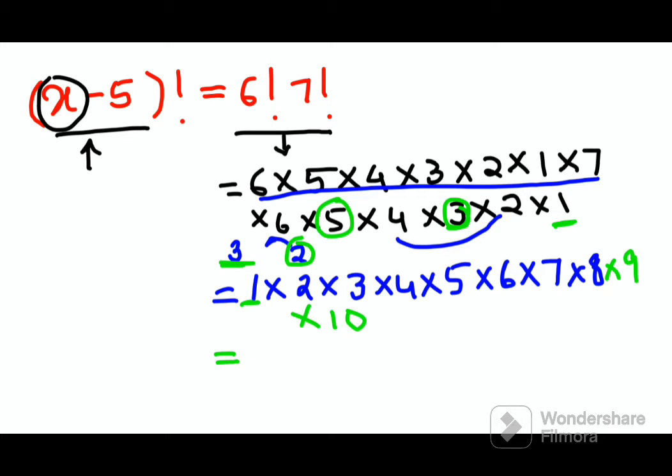So now if you look closely, this entire multiplication is happening from 1 and going up to 10. So basically this is coming out to be 10 factorial. So here I can say that x minus 5 the whole factorial is equals to 10 factorial.